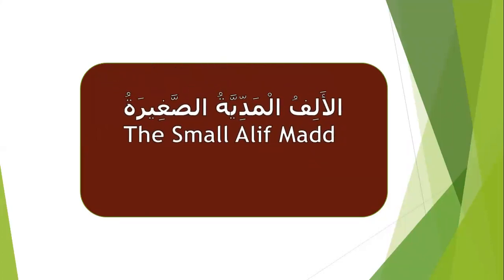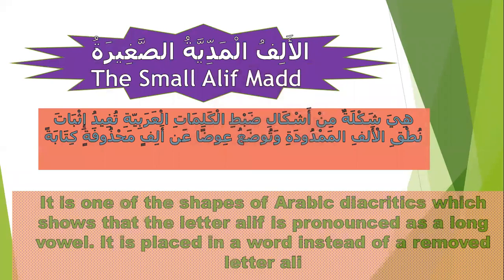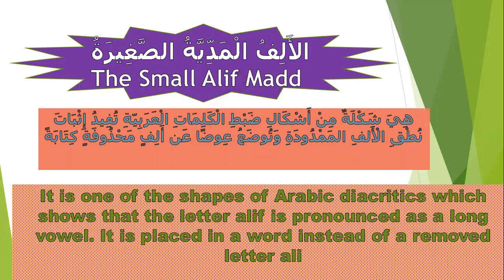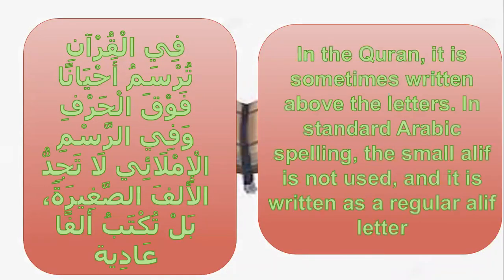The lesson today is about al-alif al-maddiyya al-sogheera — the small alif mad. The definition of small alif mad is that it is one of the shapes of Arabic diacritics, which show that the letter alif will be pronounced as a long vowel. It is placed in a word instead of writing the letter alif. In standard Arabic spelling, the small alif is not used, and it is written as a regular alif letter.